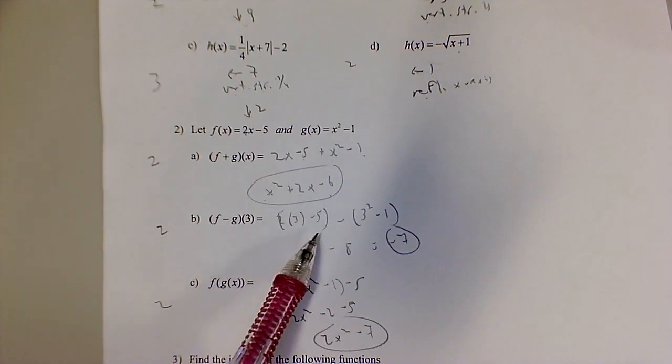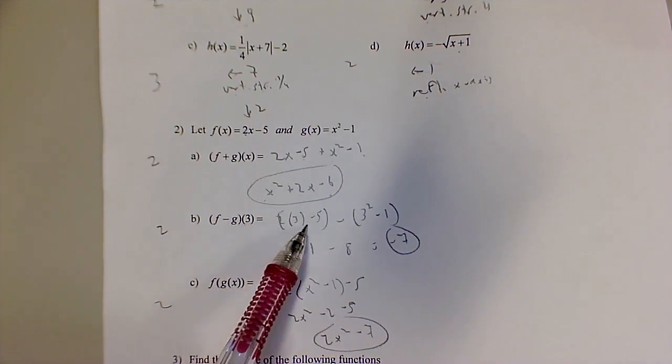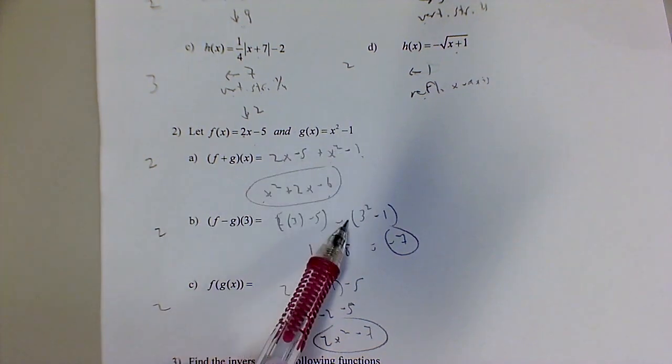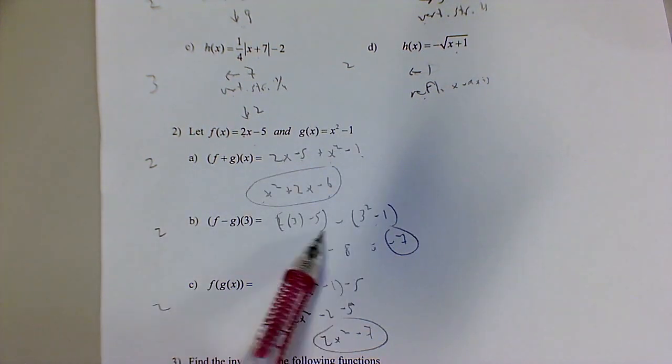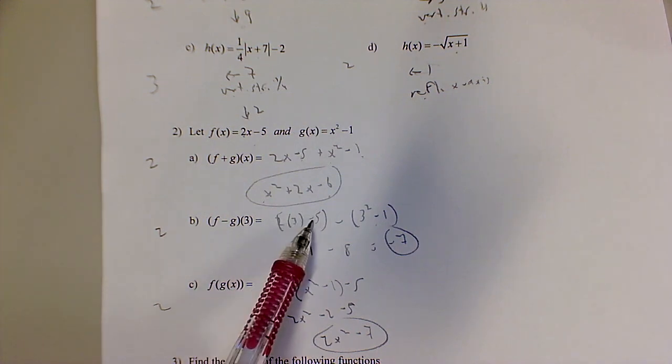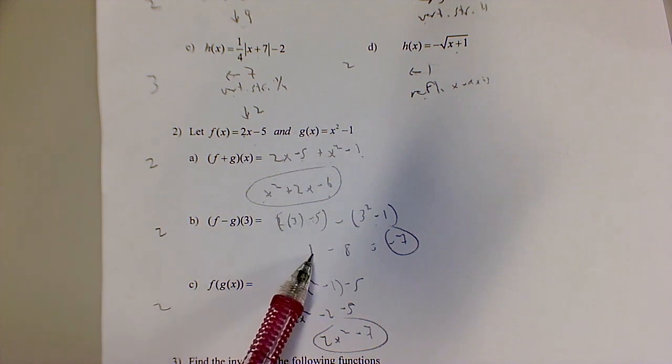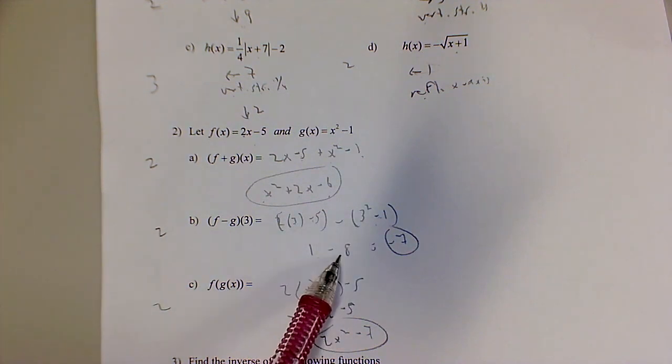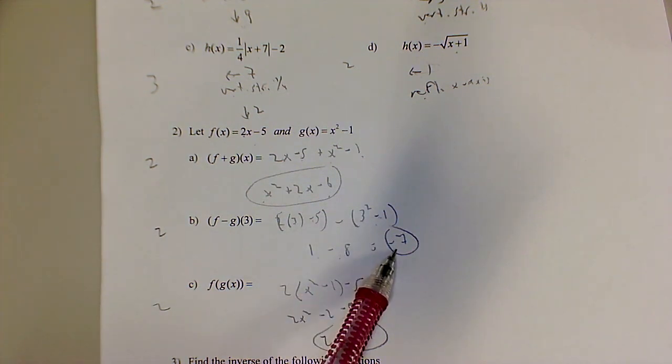This is where some people got bit. So, you're plugging 3 into these equations, 2x minus 5, and x-squared minus 1. You're subtracting them, which means 2 times 3, which is 6 minus 5 is 1. Minus, order of operations folks, 3-squared, which is 9, minus 1, which is 8. 1 minus 8 is not positive 7, it's negative 7.